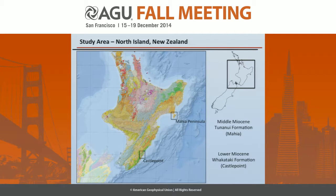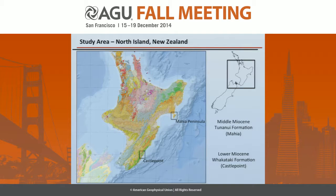This methodology is being used on the North Island of New Zealand. Here's a geologic map of the North Island highlighting the two locations where deep-water deposits of Miocene age are being studied: the Middle Miocene Tunanui Formation and the Lower Miocene Fakataki Formation. These deep-water deposits record deposition on or at the very base of slope in deep-water depositional environments, roughly analogous to modern deposition in the current configuration of the East Coast Basin in New Zealand.